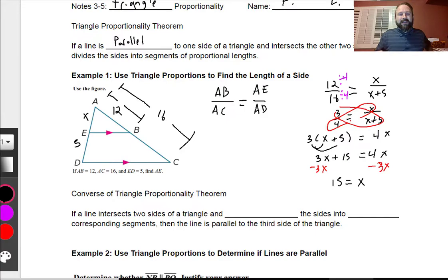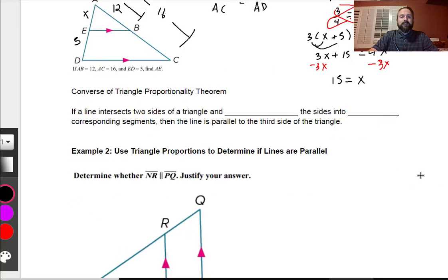Let's go on. So now we're going to talk about the converse of the triangle proportionality theorem. This means that if a line intersects two sides of a triangle and separates the sides into proportional corresponding segments, then the line is parallel to the third side of the triangle.